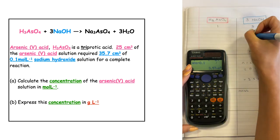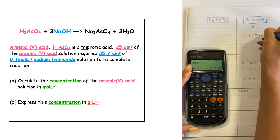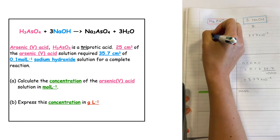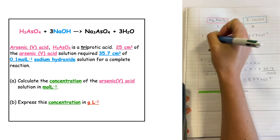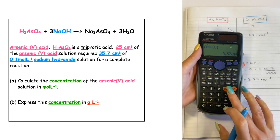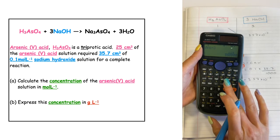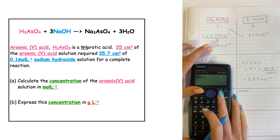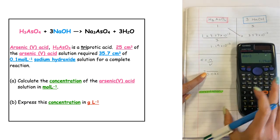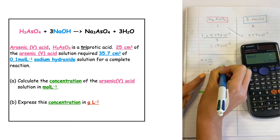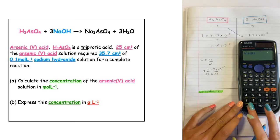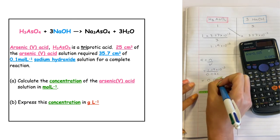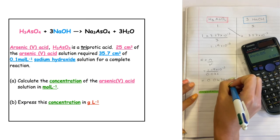We place 3.57 times 10 to the minus 3 into our mole ratio and cross multiply. The calculation on the acid side is 1 times 3.57 times 10 to the minus 3, divided by 3. Dividing by 3 gives us 1.19 times 10 to the minus 3 moles of arsenic acid that reacted. Substituting into the concentration formula: 1.19 times 10 to the minus 3 divided by 0.025 gives a concentration of 0.0476 moles per liter.